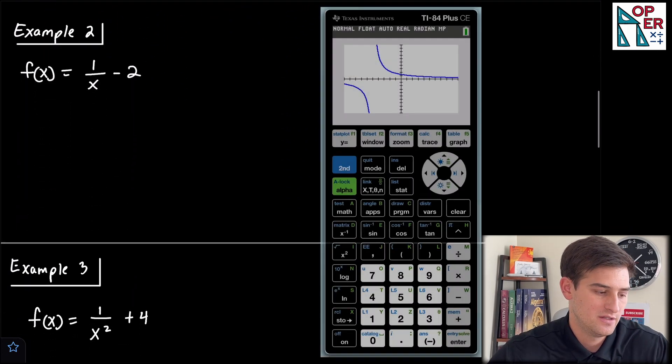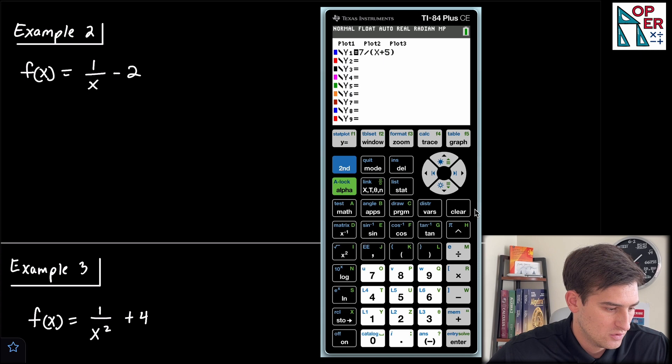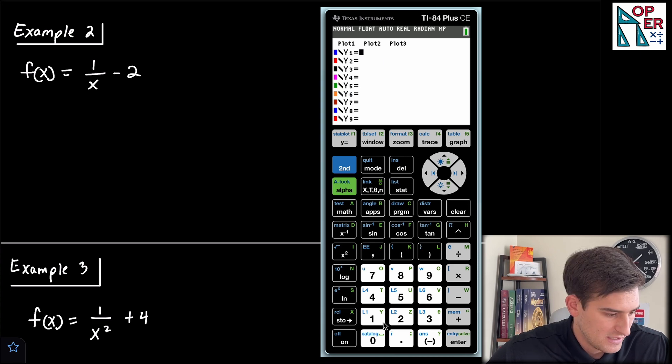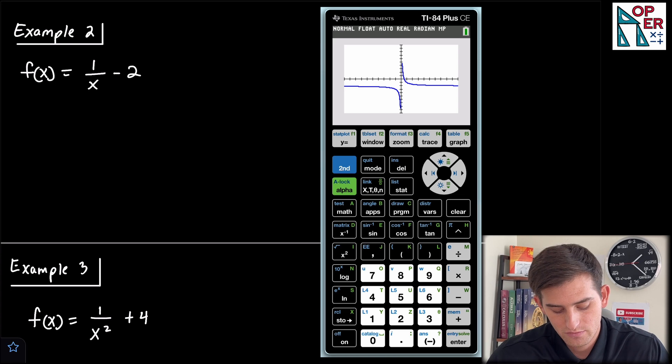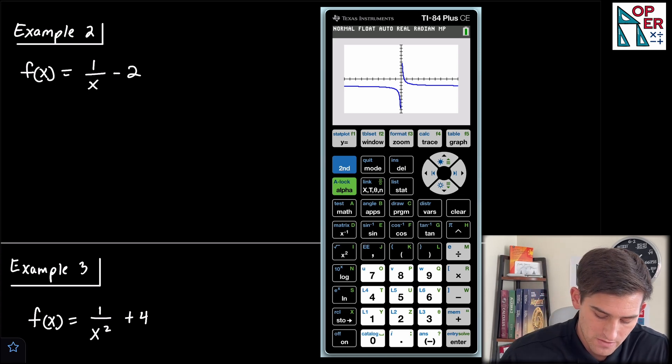Let's plug this one into our calculator and see if it passes the horizontal line test. So we have, let's do parentheses 1 divided by x, close our parentheses there, and then minus 2. So we graph this one, and once again, it passes the horizontal line test. So we know that if we go ahead and find the inverse, it will give us an inverse of the function.